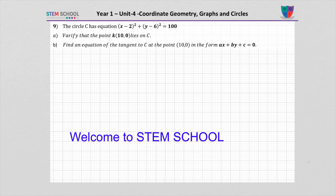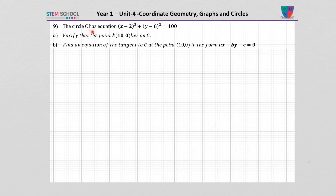Question 9. The circle C has equation x minus 2 squared plus y minus 6 squared equals 100. Part A: Verify that the point K, 10 0, lies on C. Part B: Find the equation of the tangent to C at the point 10 0 in the form ax plus by plus c equals 0.